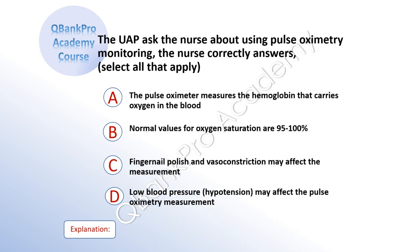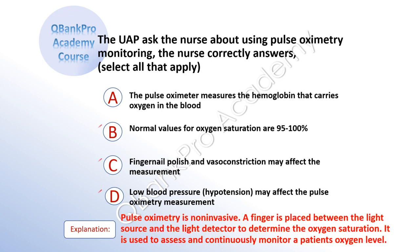The UAP asks the nurse about using pulse oximetry monitoring. The nurse correctly answers — select all that apply: A, the pulse oximeter measures the hemoglobin that carries oxygen in the blood. B, normal values for oxygen saturation are 95 to 100%. C, fingernail polish and vasoconstriction may affect the measurement. D, low blood pressure hypotension may affect the pulse oximetry measurement. The correct answer is B, C, and D. Explanation: Pulse oximetry is noninvasive. A finger is placed between the light source and the light detector to determine the oxygen saturation, and it is used to assess and continuously monitor a patient's oxygen level.